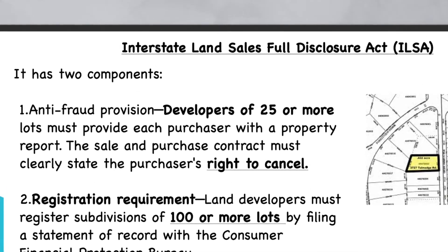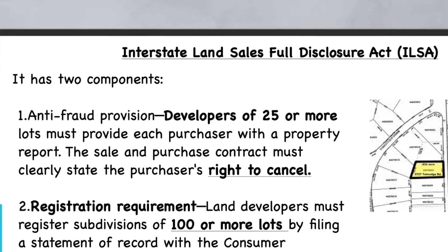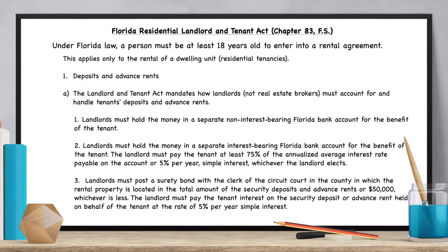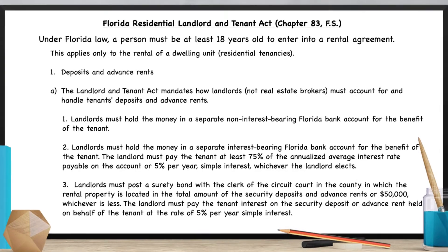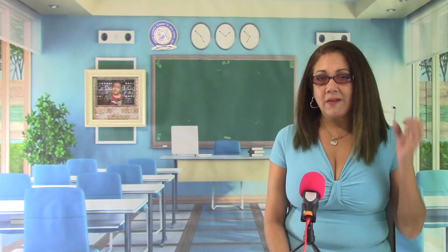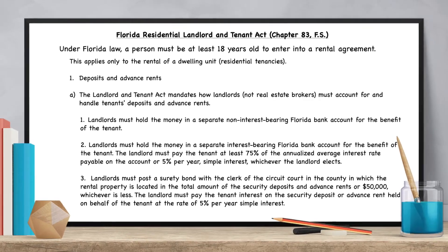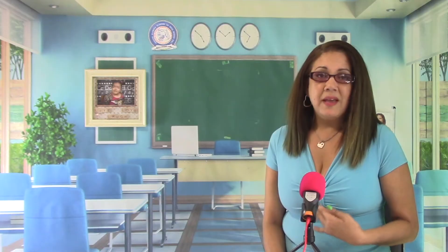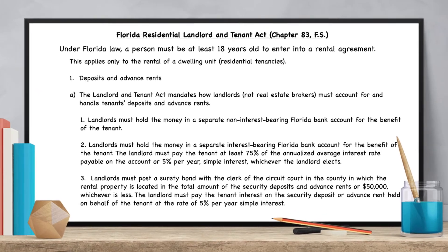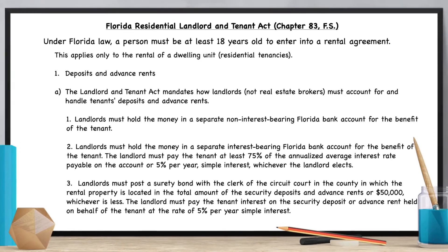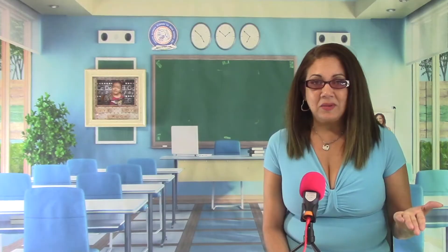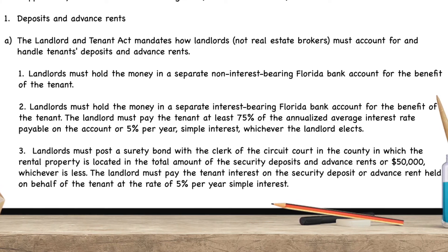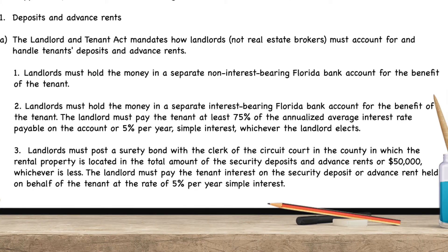The Florida Residential Landlord and Tenant Act requires landlords to maintain security deposits and advanced rents in one of three ways: one, deposit in a separate non-interest-bearing account; two, deposit in a separate interest-bearing account and pay the tenant either 5% of the interest or 70% of the annualized average interest payable on the account; or three, post a surety bond for the lesser of the amount of the funds or $50,000 and pay the tenant 5% interest.